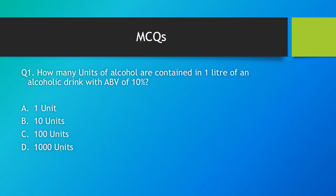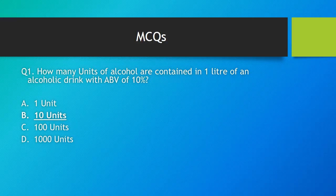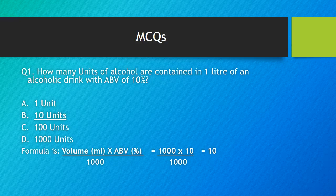Before we conclude, we will go through 5 MCQs. Question 1: how many units of alcohol are contained in 1 liter of an alcoholic drink with ABV of 10%? The correct answer is option B — 10 units. Using the formula, 1 liter is 1000 ml, so 1000 multiplied by 10 divided by 1000 gives 10 units.